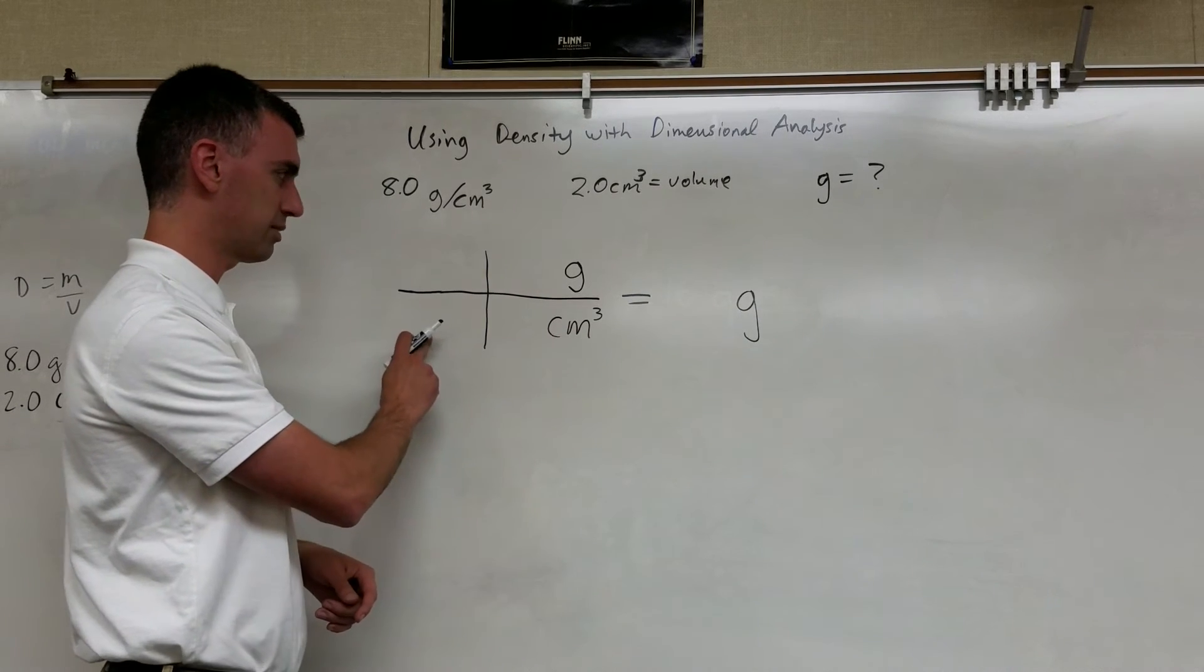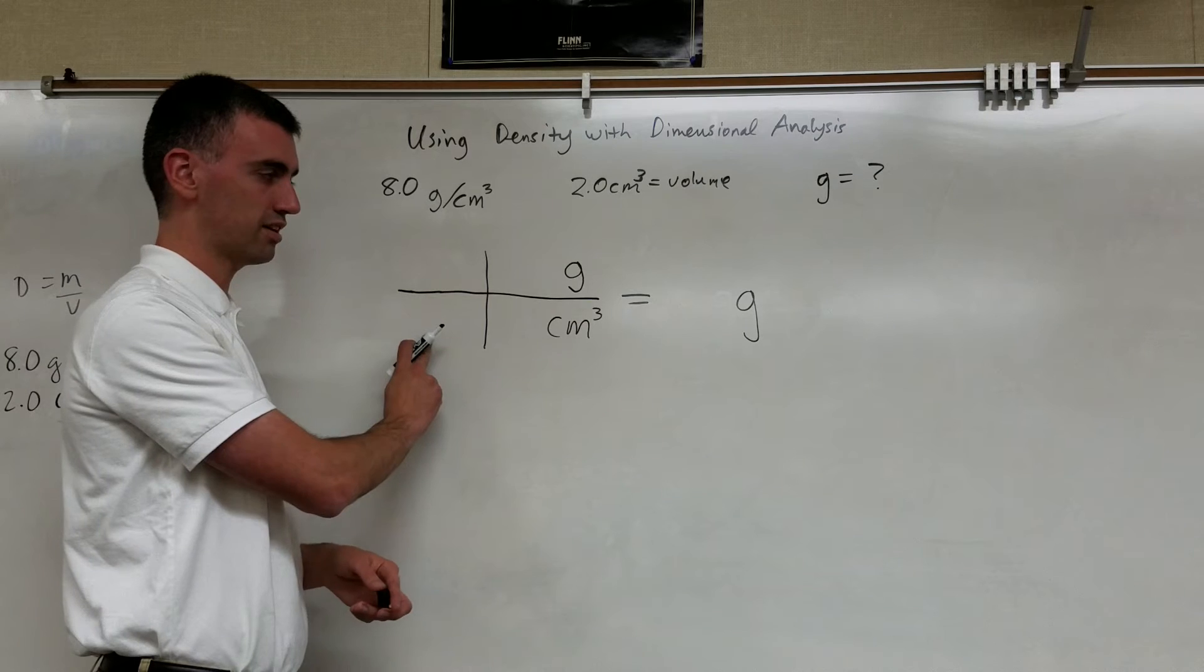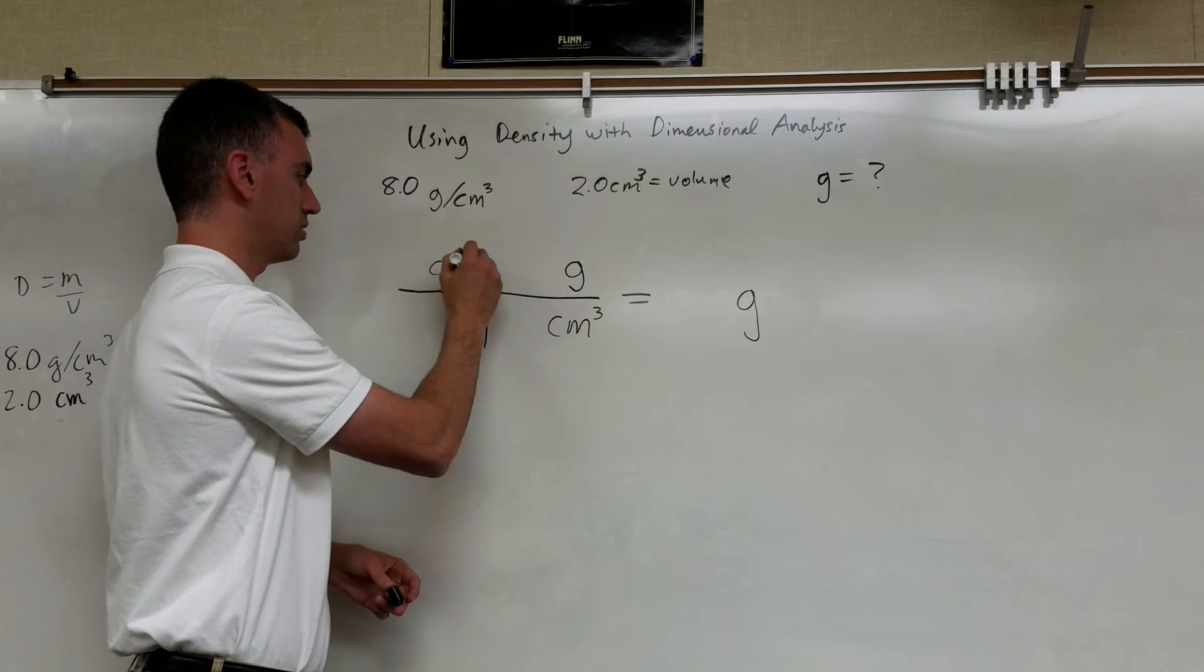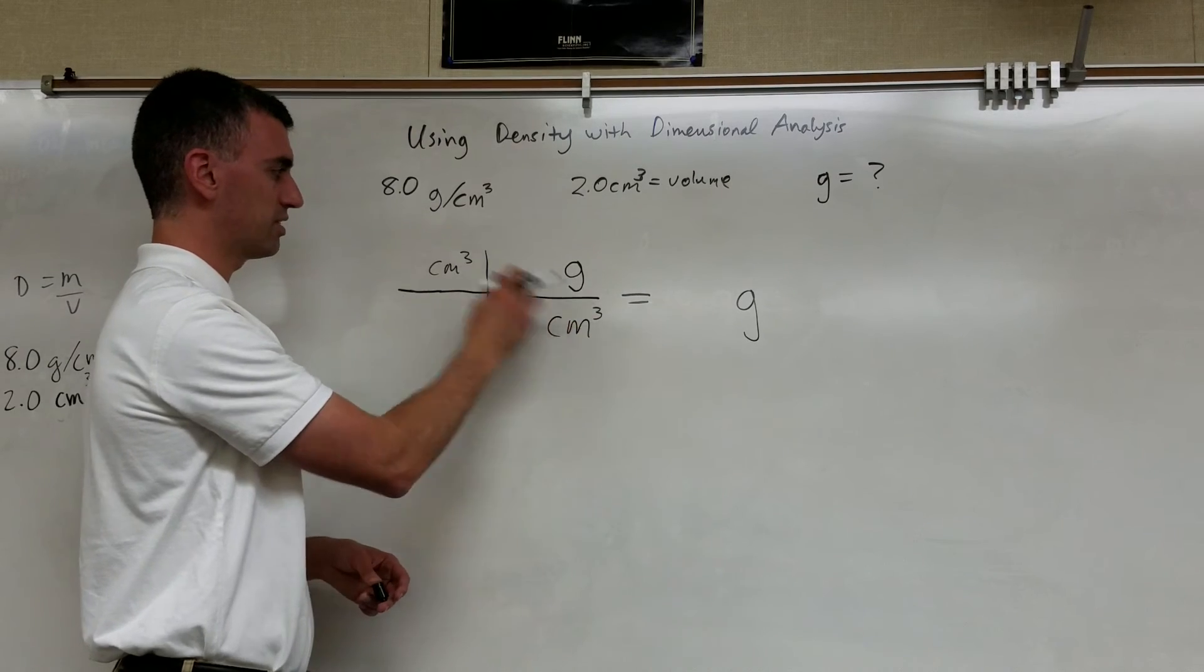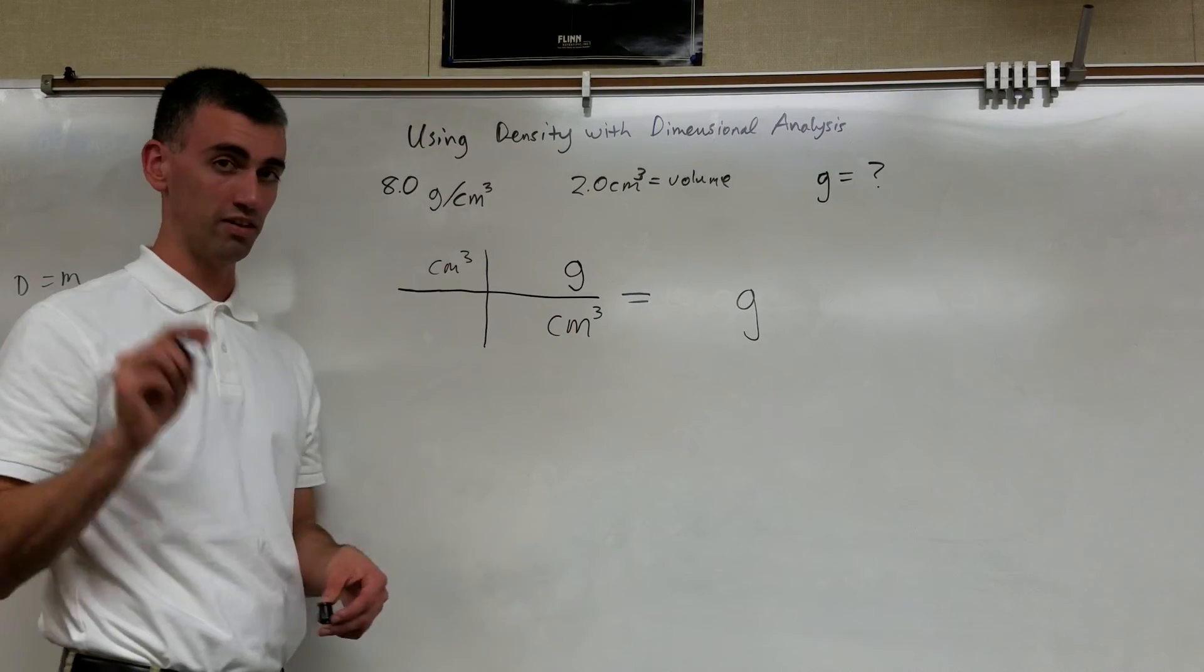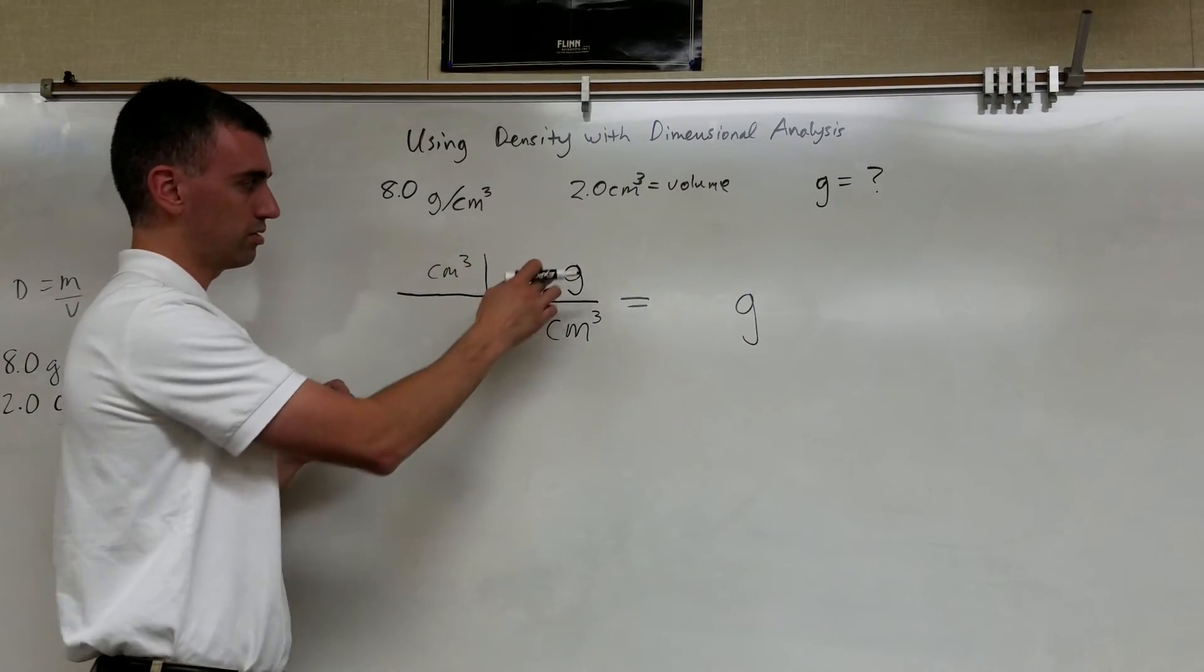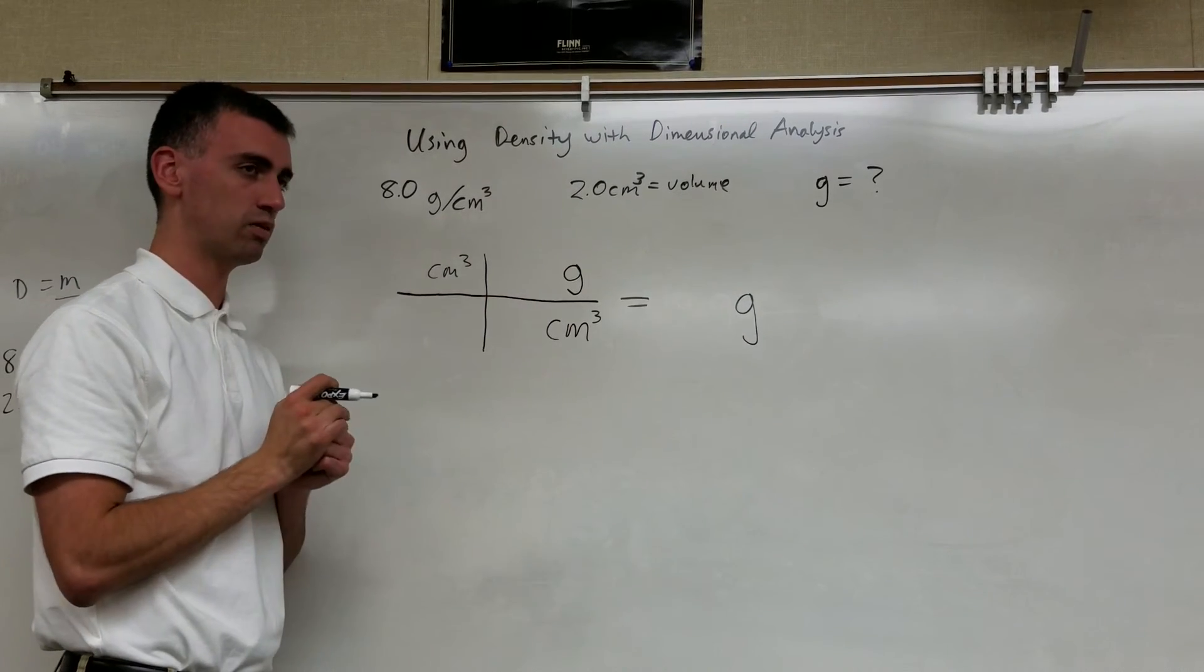I don't want it on bottom because I'm going to have grams per centimeters cubed times centimeters cubed and that's not good. I'll put it up here. That way centimeters cubed cancel centimeters cubed and that goes away leaving me just the grams that I want in the final answer. So this cancels this. Good to go. Leaving behind just that one unit that I want.